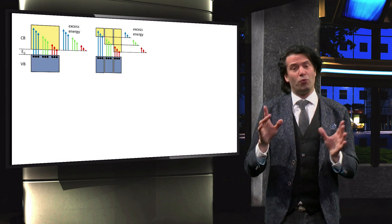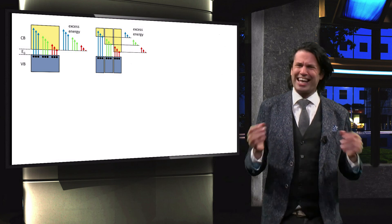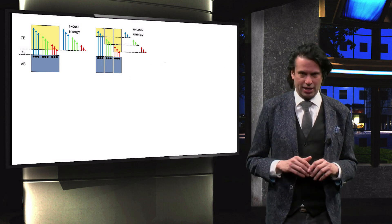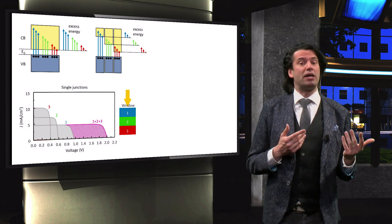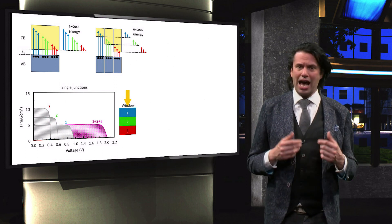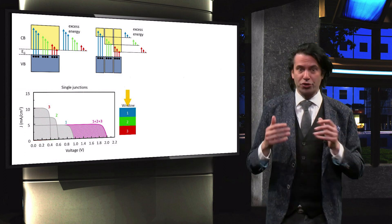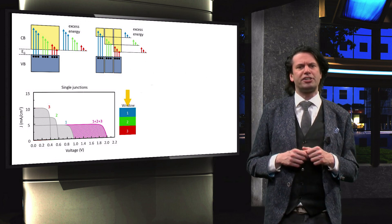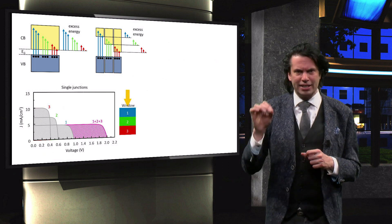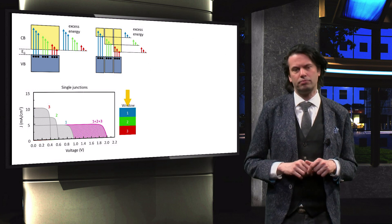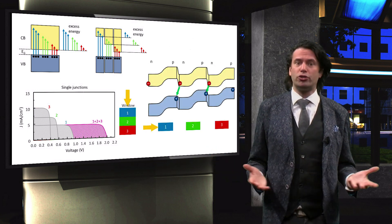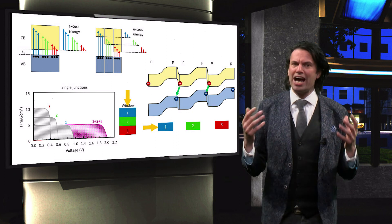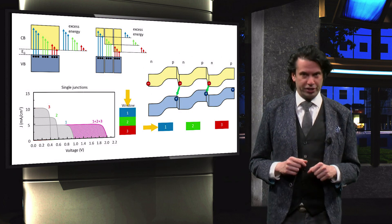In summary, we have discussed how using multiple junctions in a solar cell can increase the spectral utilization of a device by decreasing the amount of excess energy. We saw that the junction with the highest bandgap energy always acts as the top cell, and that the junctions in a multijunction device are connected in series. Consequently, the voltages of the individual junctions add up, and the current of the device is limited by that of the lowest generating junction. Finally, we discussed how multijunction devices require the use of tunnel recombination junctions. In the next section we will look at the general processing techniques used for thin film deposition.